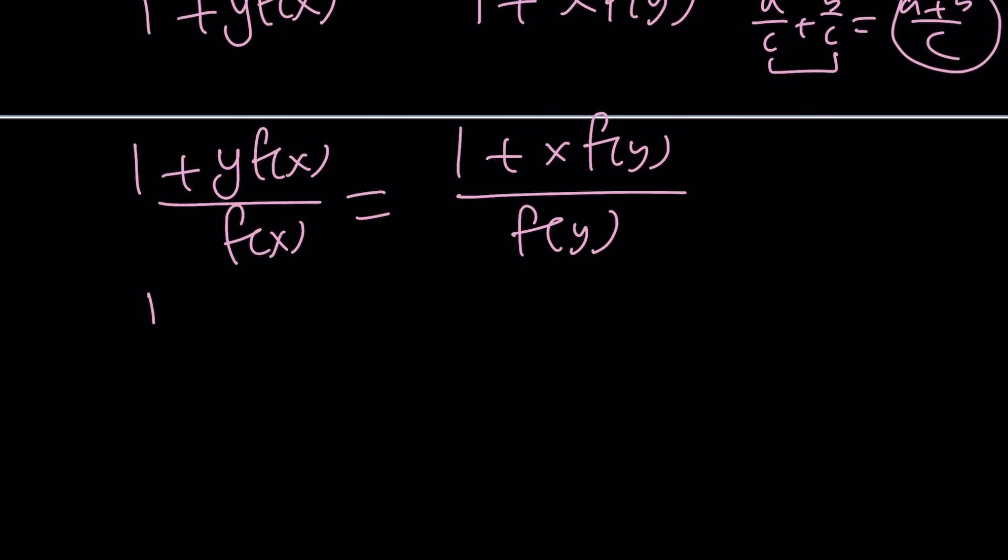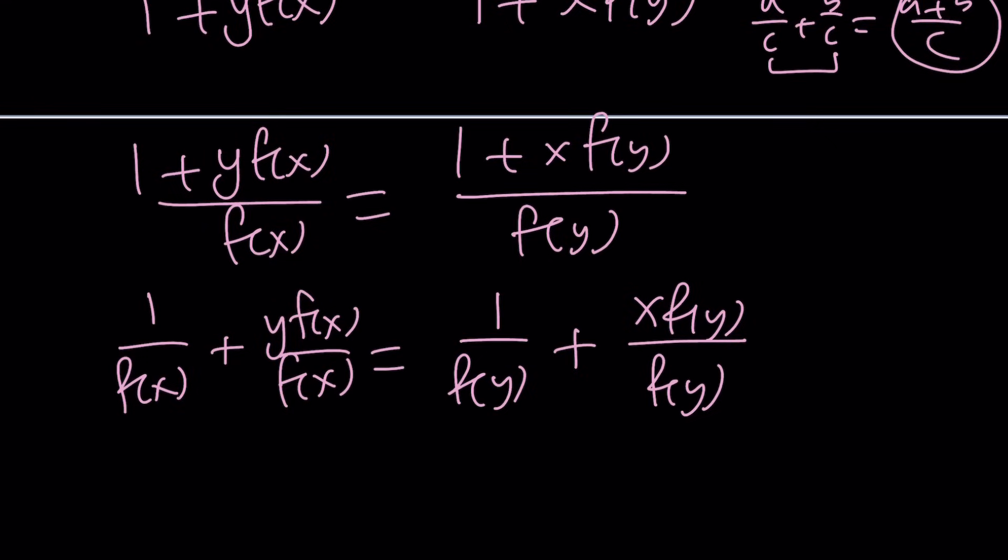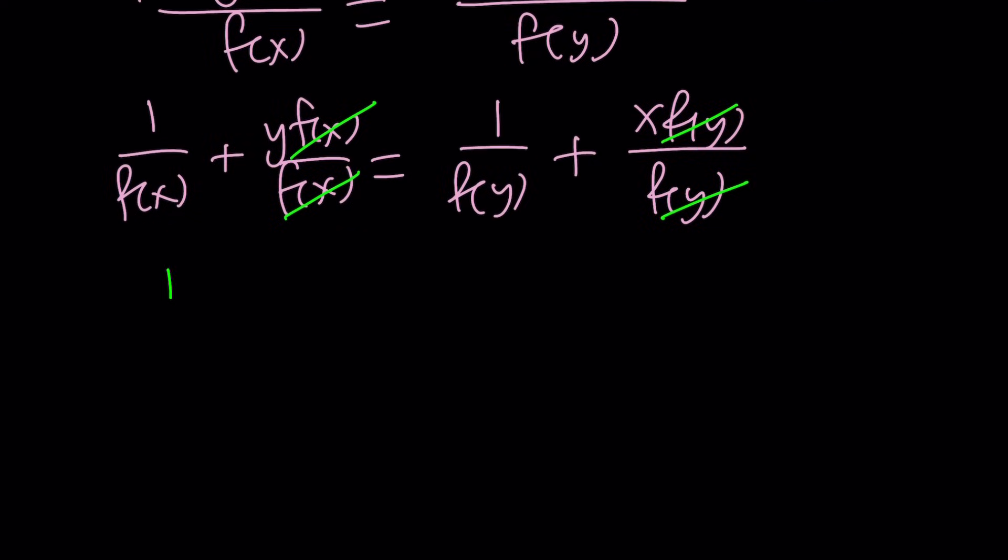So from here, we get 1 over f of x plus y f of x divided by f of x. This is the very reason we did that. Equals 1 over f of y plus x f of y over f of y. Nice. Now here's what happens. Of course, f of x should not be 0. We're going to go ahead and cancel these out. And f of y, for the same reason. And we get something amazing. I mean, I can't emphasize this enough. Because you're about to see a little bit of hocus pocus or mathemagic.